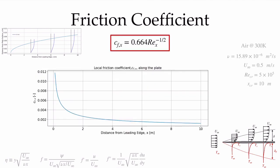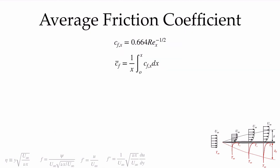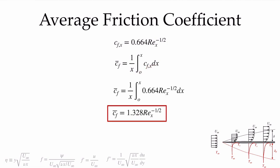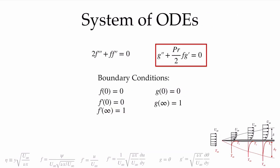Plotting Cf as a function of x, we see a large value near the leading edge where the free stream adjusts rapidly to the no-slip condition, decreasing as the boundary layer grows. Averaging from the leading edge to any point x — integrating x^(-1/2) and dividing by x — the average skin friction coefficient is everywhere twice the local value: C̄f = 1.328 * ReL^(-1/2).